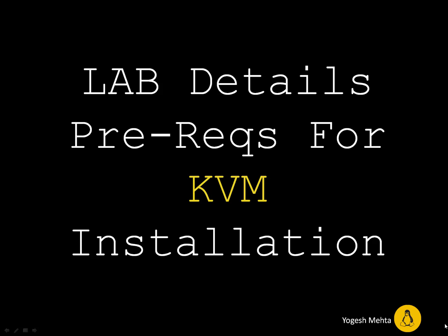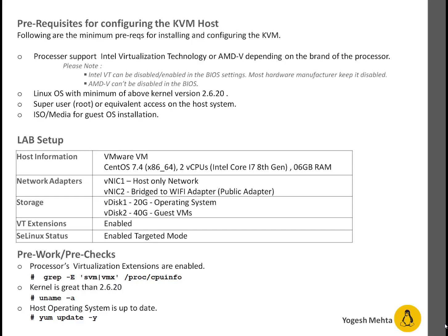Welcome everyone. In this session we're going to talk about lab details and prerequisites for KVM installation. The first prerequisite is a processor which supports Intel VT or AMD-V depending upon your processor type. We need a Linux operating system with the minimum kernel version 2.6.20, and superuser — basically root or equivalent — access on the whole system, plus ISO media for guest OS installation.